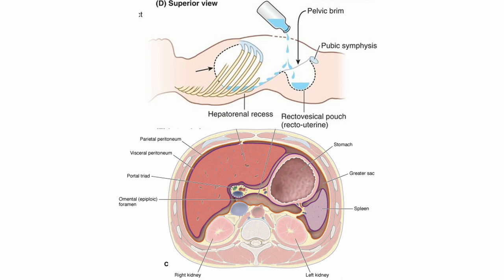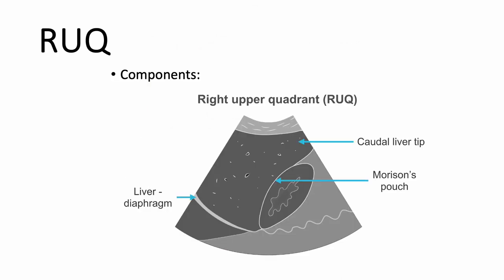FOCUS means in each view we ask ourselves a question and try to find an answer. In the right upper quadrant I have two questions: first, do I have free fluid in the right upper quadrant? Second, do I have free fluid in the right thoracic space? To answer these questions I need an adequate view — I need to see the liver, the right kidney, and the interface between them, which is Morrison's pouch.